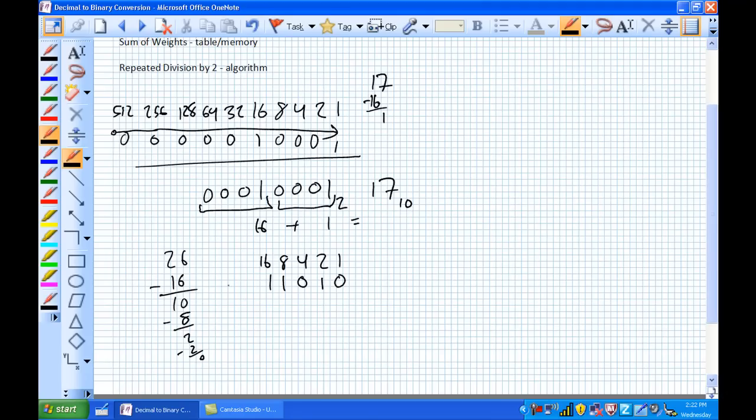That's 16, that's 8. There's no 4s in 2, but there is a 2 in 2, which gives us 0. There's no 1s in 0. So our answer, in 8-bit or byte format: 00011010 is 26 decimal.